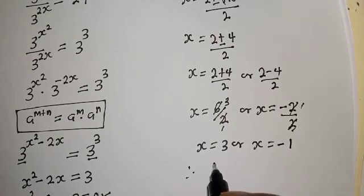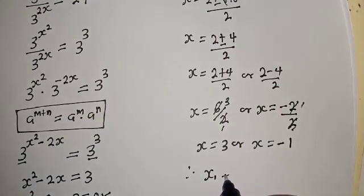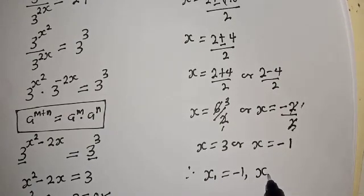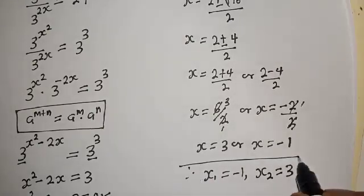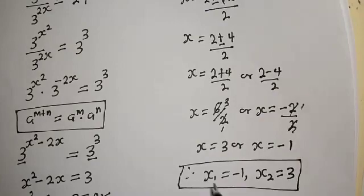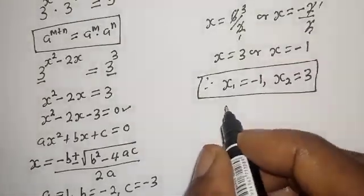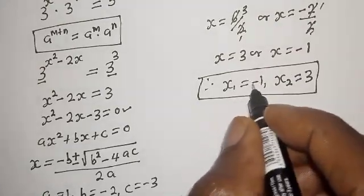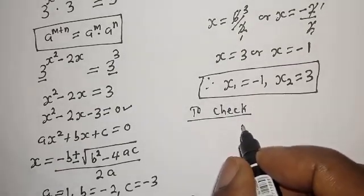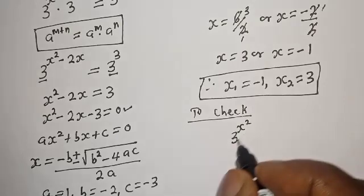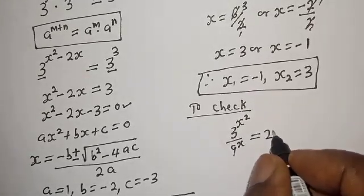Therefore our final answer: s is equal to 3 or s is equal to minus 1. These are the values of x. We can check to confirm if this answer is right. Let's check at s equal to minus 1. We have the given equation: 3 raised to power s squared over 9 raised to power x is equal to 27.